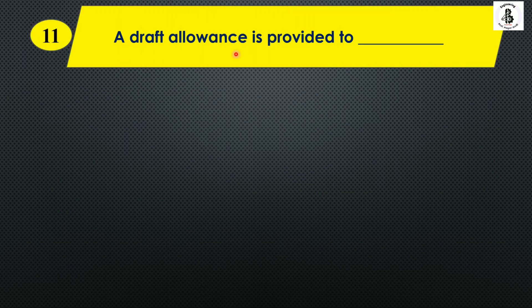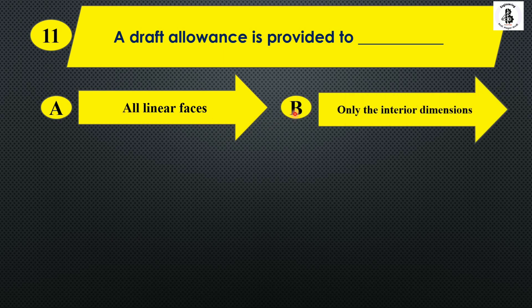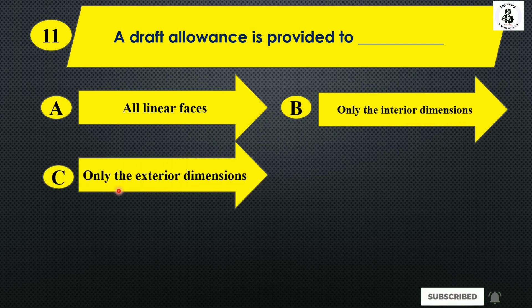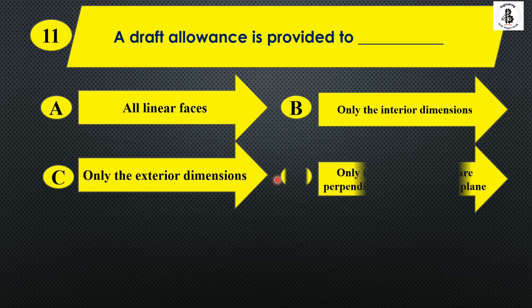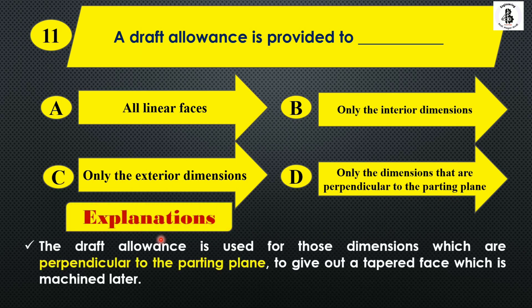A draft allowance is provided to: Option A: all linear faces, Option B: only the interior dimensions, Option C: only the exterior dimensions, and Option D: only the dimensions that are perpendicular to the parting plane. The draft allowance is used for those dimensions which are perpendicular to the parting line, to give a tapered face which is machined later. So the right answer is Option D, only dimensions perpendicular to the parting line.